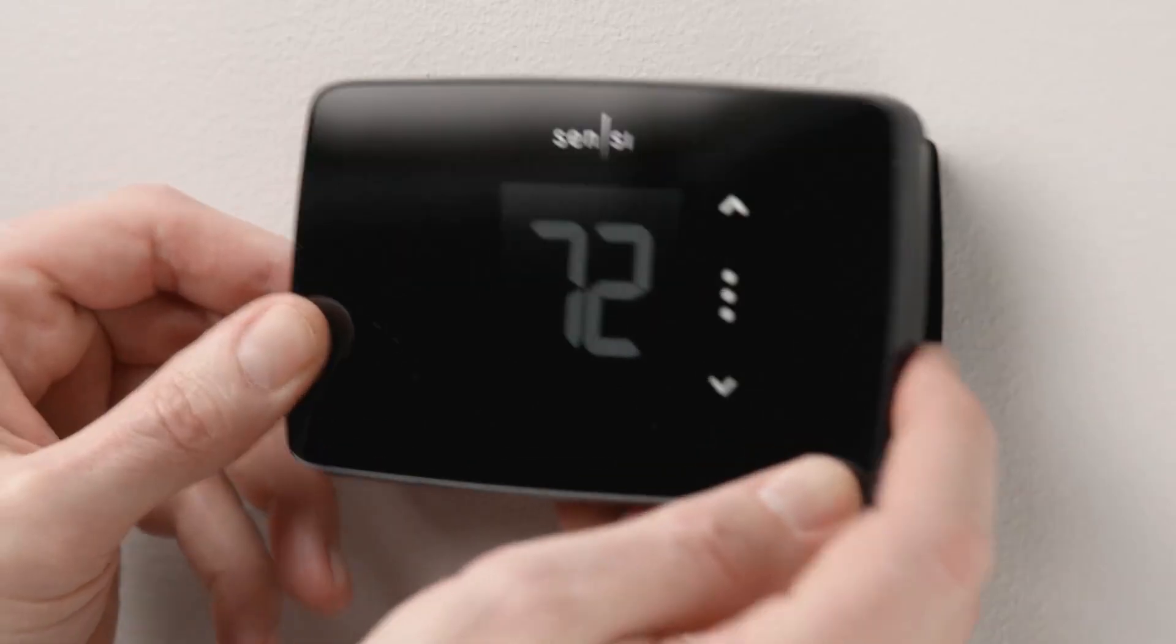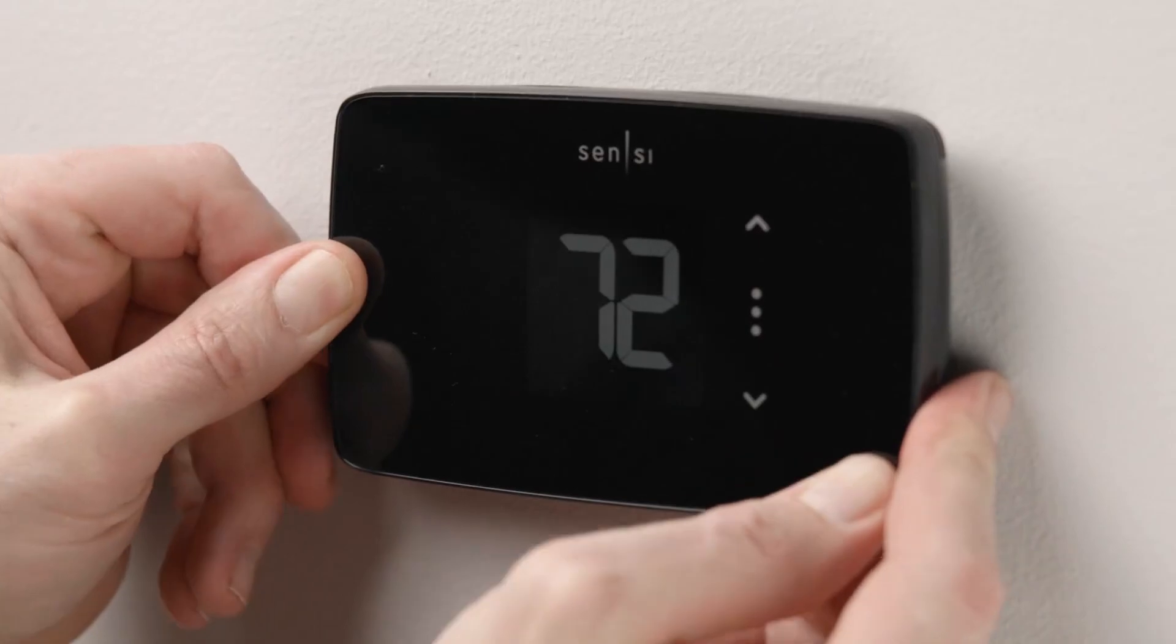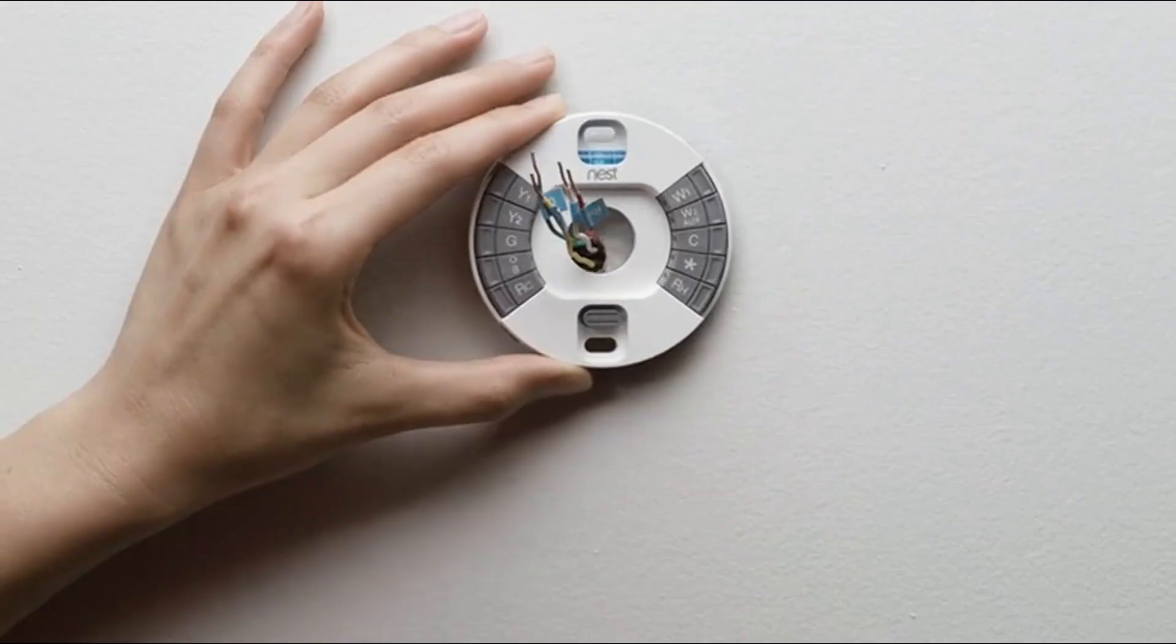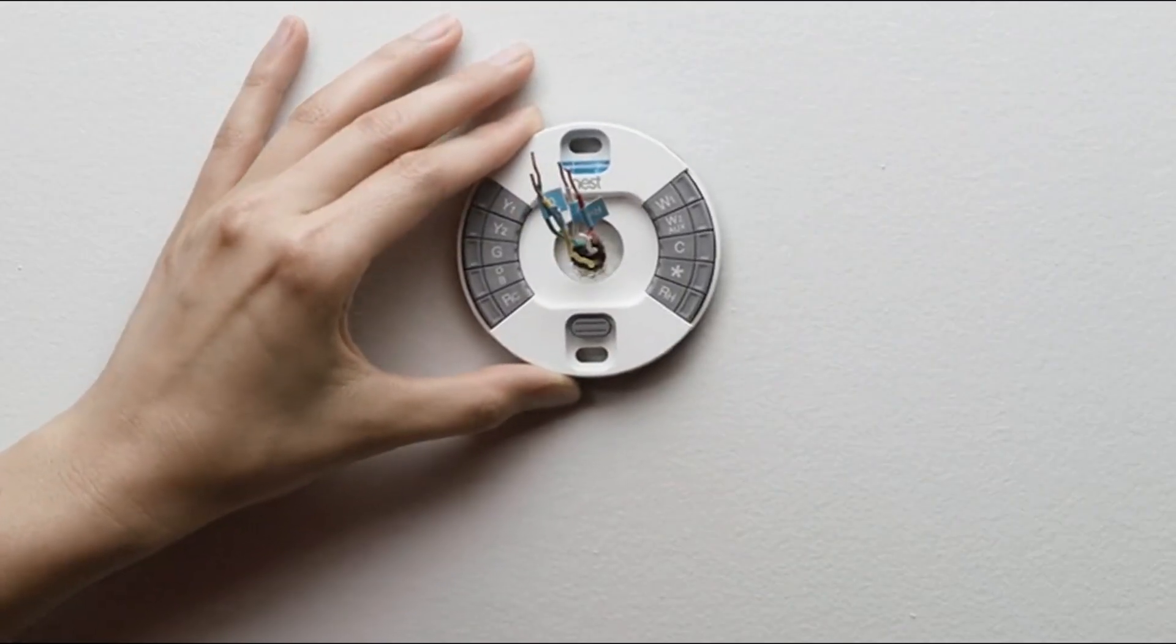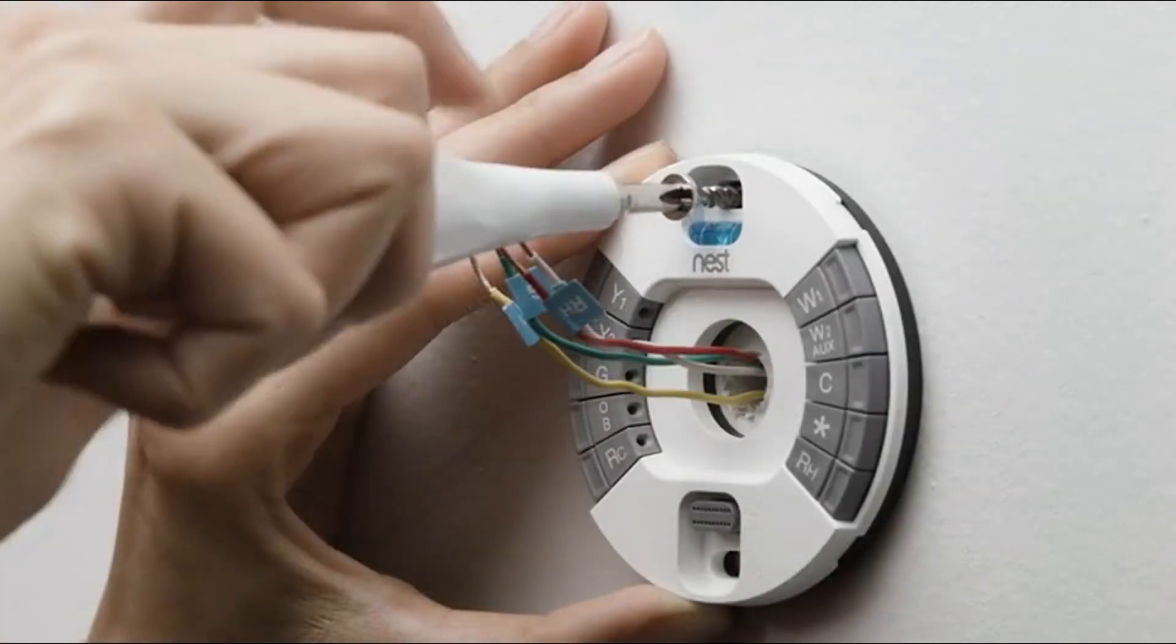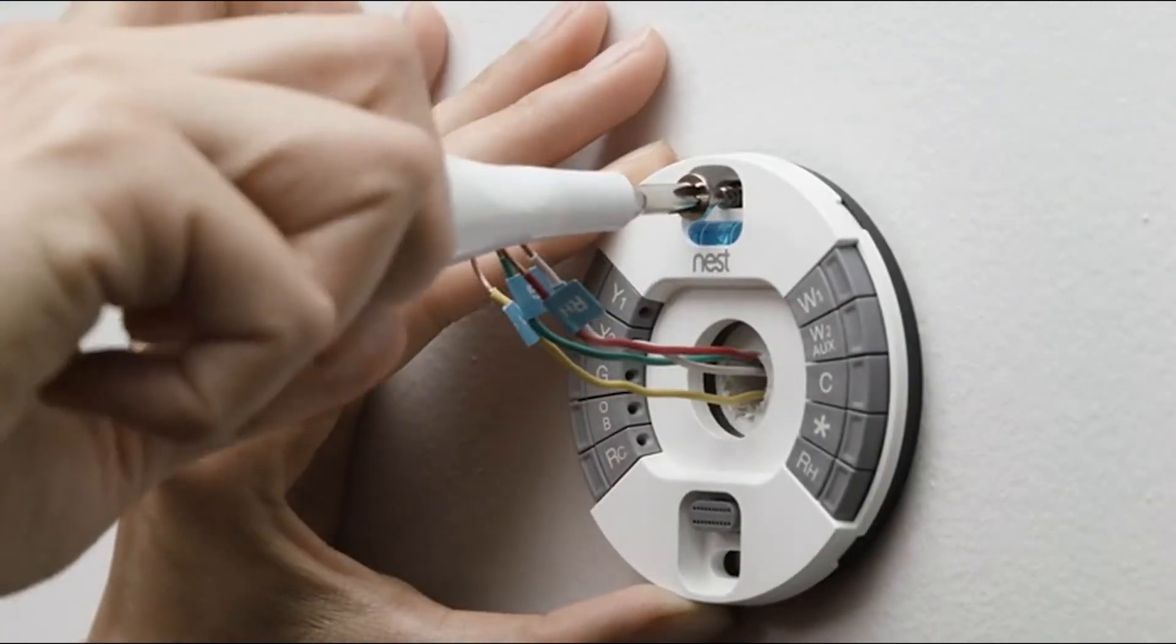Next, check for a C-wire, common wire, in your current thermostat setup. Many smart thermostats require a C-wire for continuous power, but if your system lacks one, you may need to install it or use an adapter that some models offer.